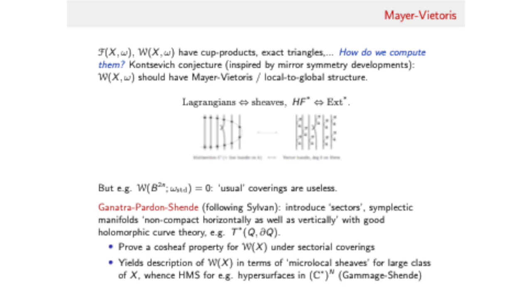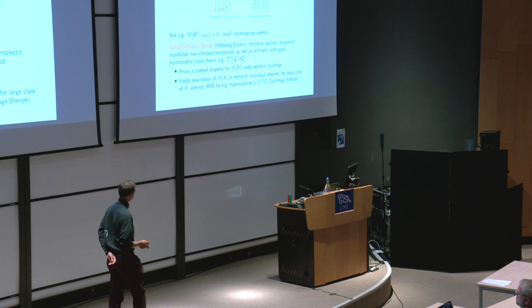They proved this Cauchy or local-to-global property for the wrapped category under appropriate kinds of covers, and the proof really involved building a vast amount of technology. Ganatra, Pardon and Shende wrote a triple of spectacular papers, the first two are about 150 pages each. These wrapped categories have avatars that are much more controlled - they're not cohomologically infinite. The wrapped categories are expressed as localizations of things that have much better algebraic properties. In the end that entire package is used to produce this Cauchy property which in turn leads to rather formal proofs of mirror symmetry in a number of new cases by Vivek and coauthors.